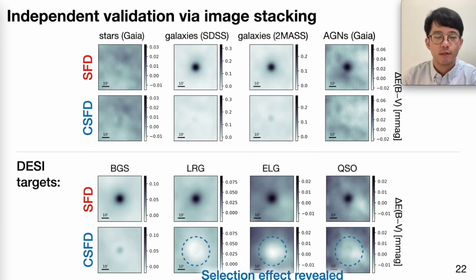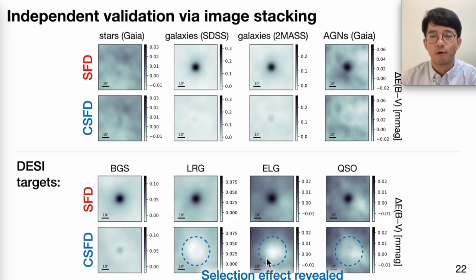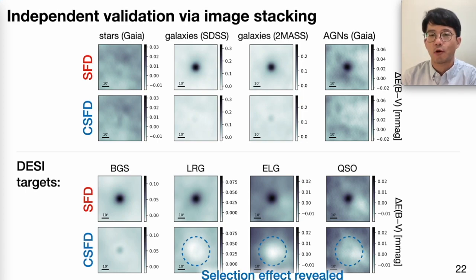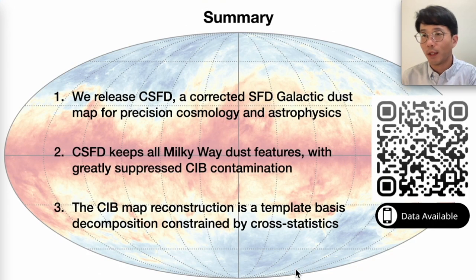There is another interesting feature in the DESI stacks, especially the higher-redshift ones. For example, in ELG, you see that these targets are preferentially selected in low-dust-column regions, meaning they are incomplete in more dusty patches of the sky. Because this is actually a real selection effect, having this information in CSFD is the first step toward modeling it — specifically, putting this selection effect into the random catalog in DESI.